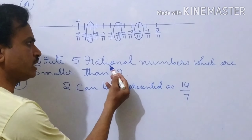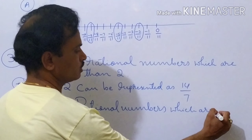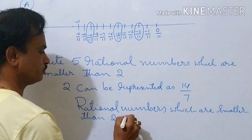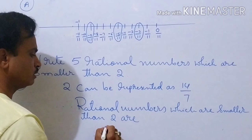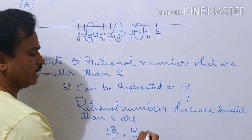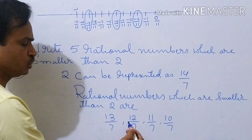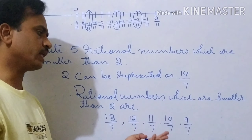We want rational numbers smaller than 2. So rational numbers which are smaller than 2: now 2 is equal to 14 by 7, so we should take smaller than 2, that means 13 by 7, next 12 by 7, next 11 by 7, next 10 by 7 — how many do you need? 5. One more: 9 by 7. So all these rational numbers are smaller than 2.